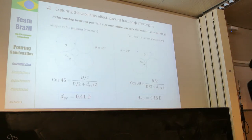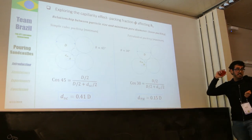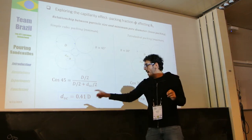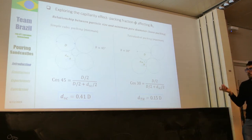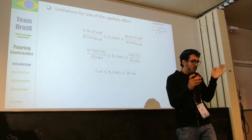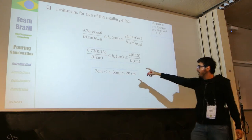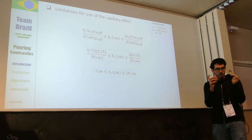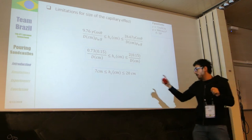Another really important thing is exploring the capillary effects using the packing fraction and how it affects the maximum heights the sandcastle will achieve. For example, we have a simple cubic packing, which is the minimum achievable — considering the distance between the center of the grain and the void between many grains. We also have a theoretical maximum packing. This is important because we can build an equation that tells us exactly what range of heights we will achieve experimentally.